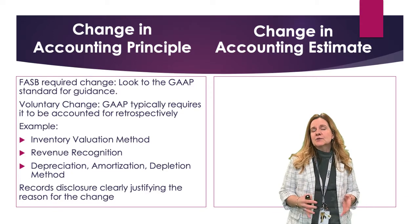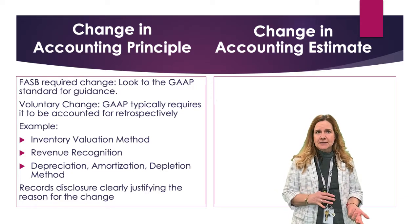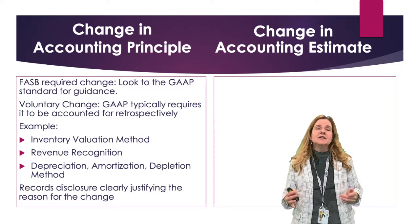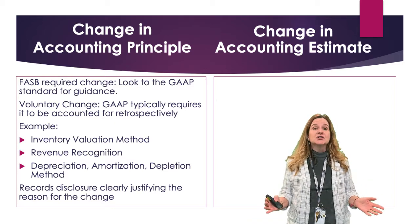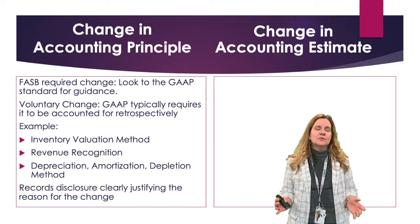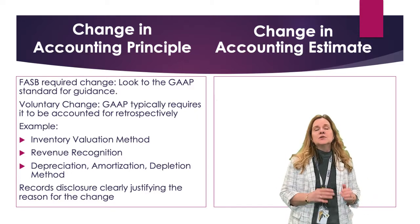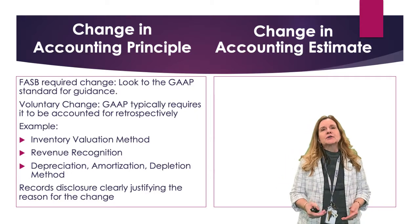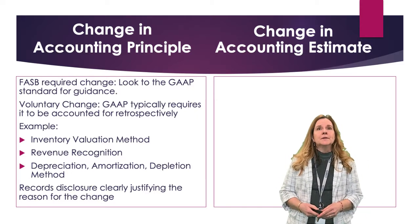That is a change in accounting principle. Normally when it's voluntary, it's retrospective. And if it is required by GAAP — if FASB makes a change in our principles, our standards — and we have to go back and adjust, then we have to look to their guidance as to how it needs to be reported.